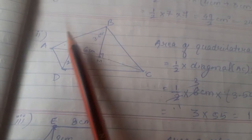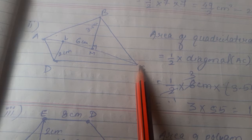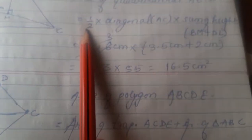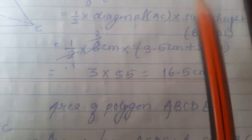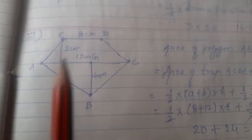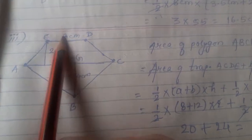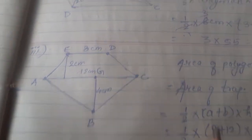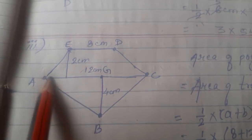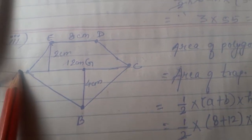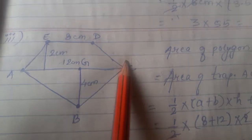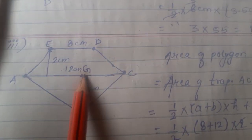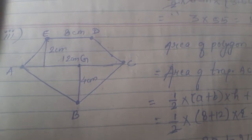Now we have to find out the area of the quadrilateral A, B, C, D — which has 5 sides, so it is actually a pentagon, a five-sided figure. To find the area, we join diagonal AC. On one side we get a triangle, and on the other side we find a trapezium figure. Since we know the formula for trapezium, we can get the area of the given pentagon.